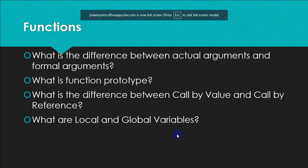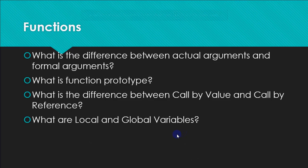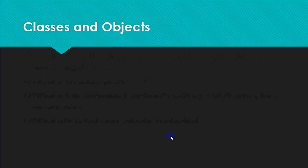Then we have local and global variables. The variables which are defined within a function are local to that function — they can be used within the function only. Global variables are declared outside all the functions and can be accessed anywhere in the program, in any of the functions.